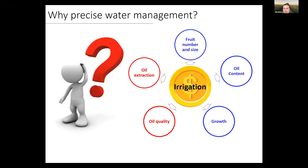You can see that some of these aspects are in blue and some are in red in the slide. The reason is that in olive, some processes like fruit number and fruit size are positively affected by irrigation, but others like oil quality can be negatively affected by excessive irrigation. This makes irrigation management of olive particularly complicated because you have to manage both irrigation and stress well.